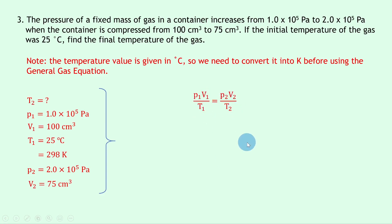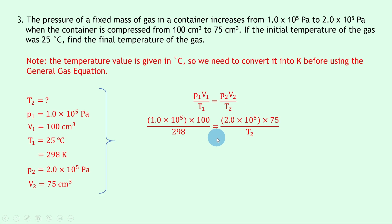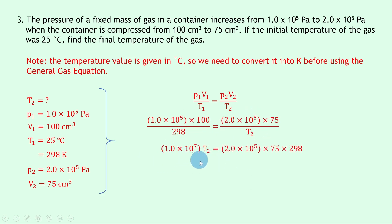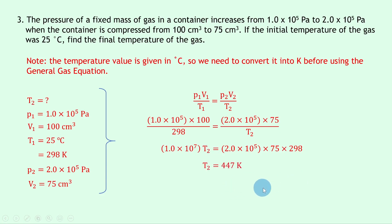Writing down the general gas equation: p1·v1 / t1 = p2·v2 / t2. Substituting in gives (1.0 × 10⁵ × 100) / 298 = (2.0 × 10⁵ × 75) / t2. Cross multiplying — top left times bottom right equals top right times bottom left — gives 1.0 × 10⁷ · t2 = 2.0 × 10⁵ × 75 × 298, where 1.0 × 10⁷ comes from 1.0 × 10⁵ × 100. Dividing the right side by 1.0 × 10⁷ gives a final answer of t2 = 447 K.